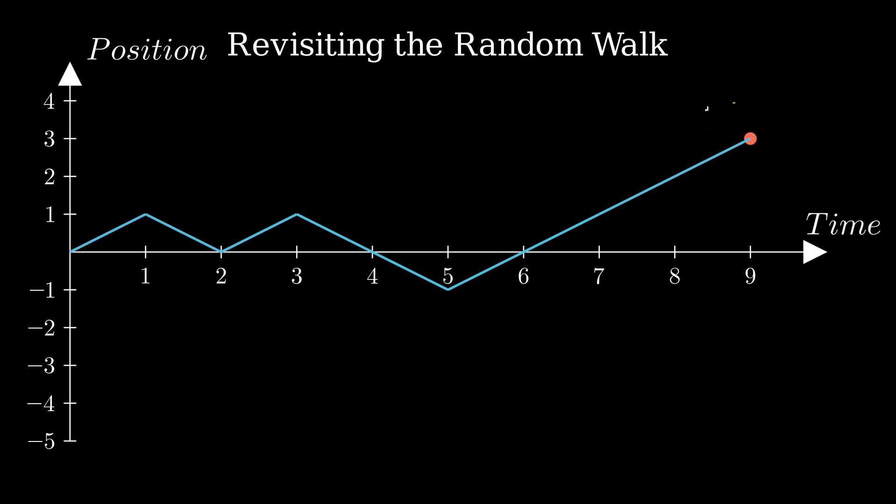It's discrete, fixed jumps up or down. Simple chaos, like the stock model from the second video. But stocks don't wait for ticks.